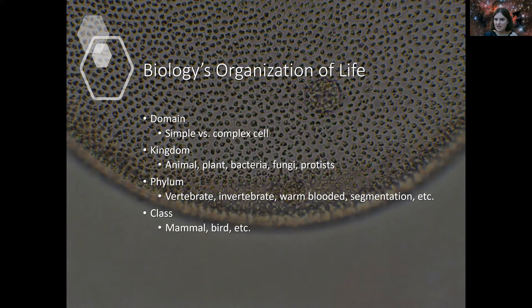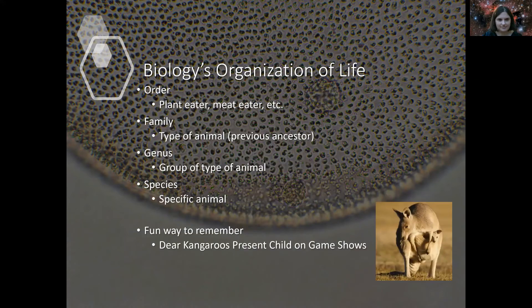Next step, class. Is it a mammal? Is it a bird? Is it a fish? And so on. Last step, order. Where does it get its energy from? Does it eat plants? Does it eat meat? Does it do photosynthesis? And so on.